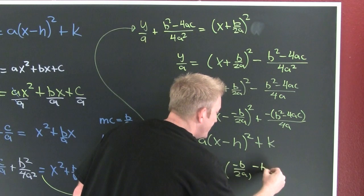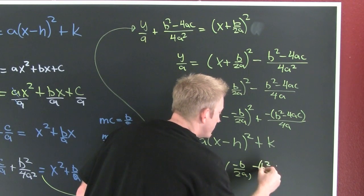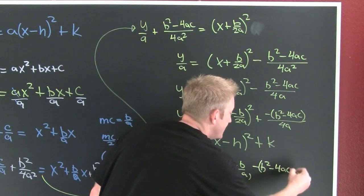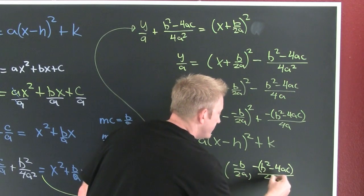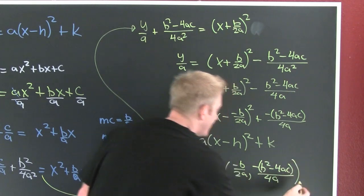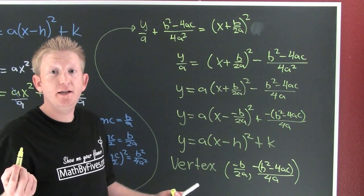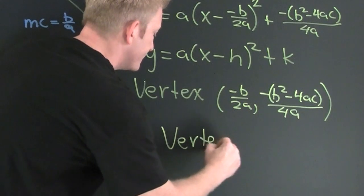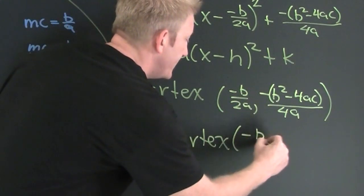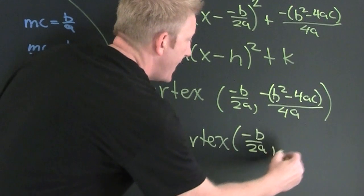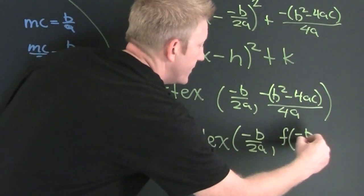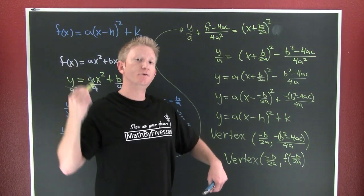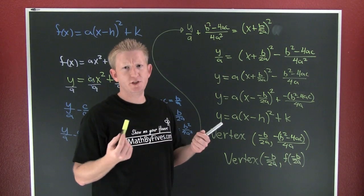And k equals minus b squared minus 4ac all over 4a. An alternative form, even in your book it'll go that the vertex is going to be at minus b over 2a. So we'll get into that, but this would be how to get it in preferred form generically.